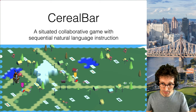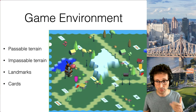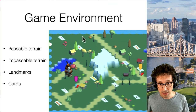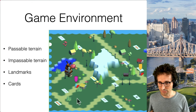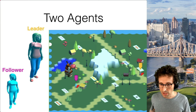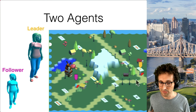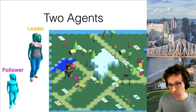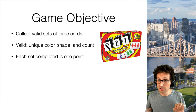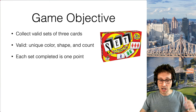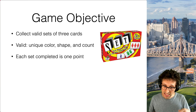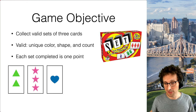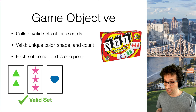This is the Serial Bar environment, generated randomly for every game. The environment includes passable terrains, impassable terrains, different types of landmarks, and cards spread around with different colors, patterns, and numbers on them. We have two agents: a leader — the colorful figure — and a follower — the monochromatic figure. Together they play a game similar to the card game Set, but in a spatial environment. They go around collecting valid sets of three cards, where a valid set has a unique color, shape, and count. Each time they complete a set, they get a point.